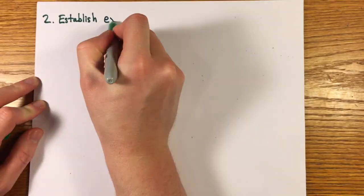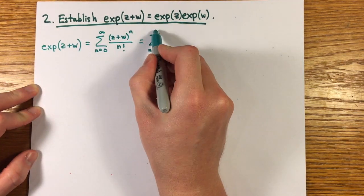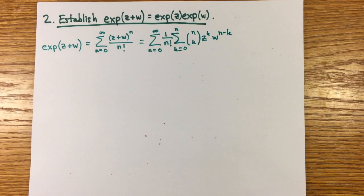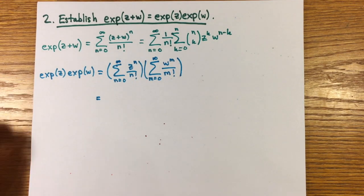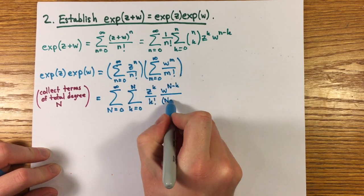Then you can establish the key property exp(z+w) = exp(z) exp(w) for all complex z and w by formal algebraic manipulation of the two series, checking that the series match term by term.